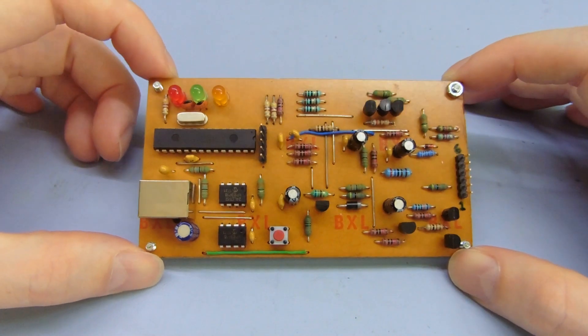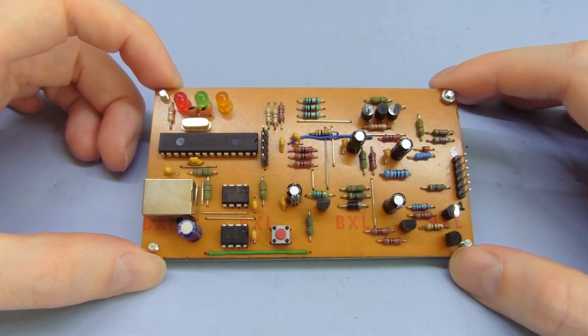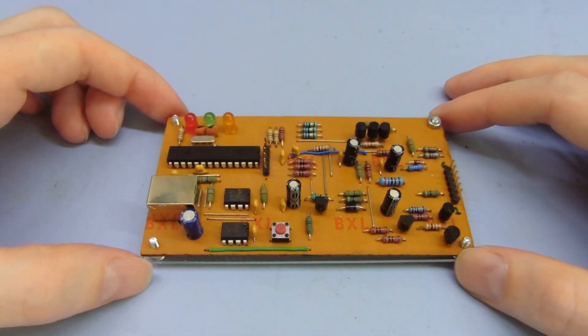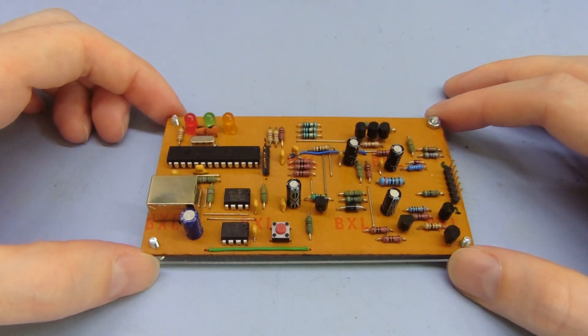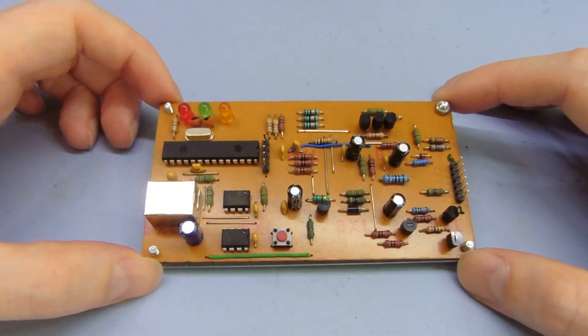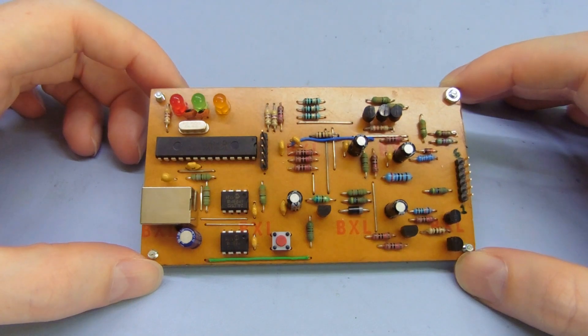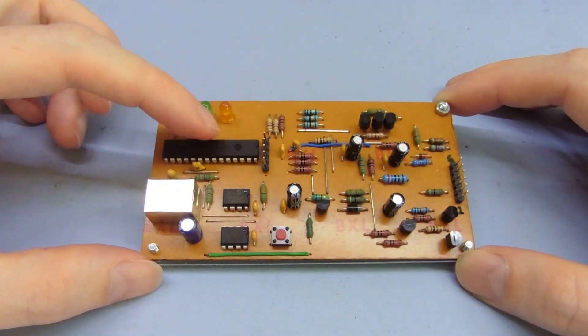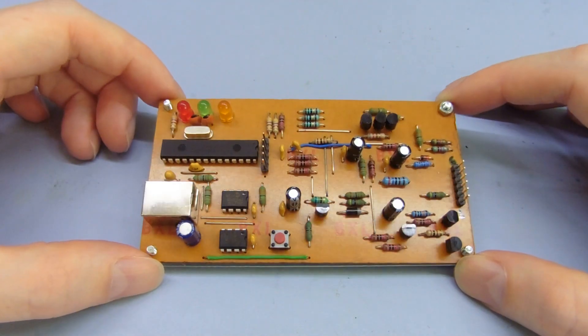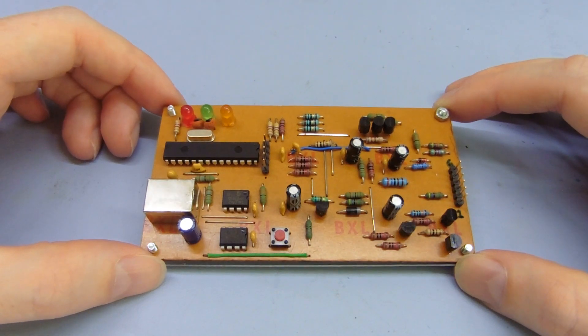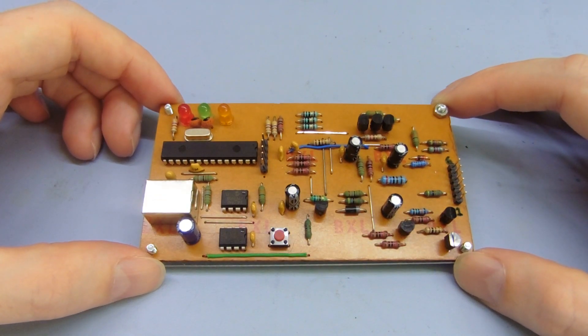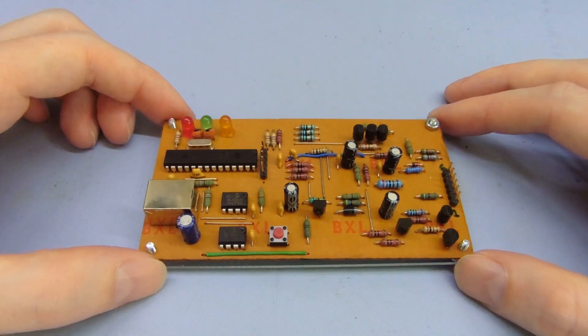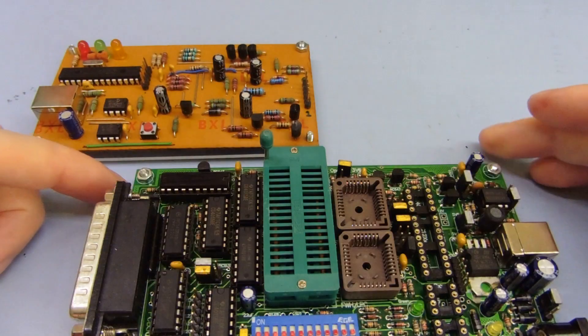This PICKit 2 itself uses a PIC 18F2550, which you have to program with the PICKit 2 software. This presents an interesting problem because you can't use it to program itself. So you need to program this separately - either find someone who has one already and get them to program it for you, or program it in some other way. There are three options I suppose you have for that to do it yourself.